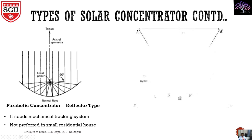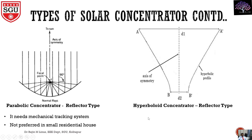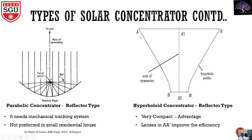The next one is the hyperboloid concentrator or reflector type. In this hyperboloid concentrator, we can see AA dash with diameter D1 and BB dash with diameter D2. These two are the lenses — one big lens and one small lens. The big lens AA dash helps to improve the efficiency.